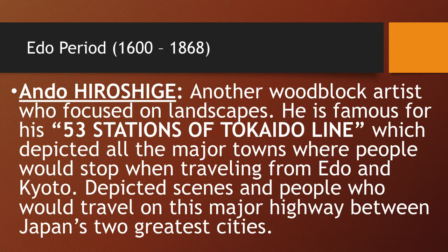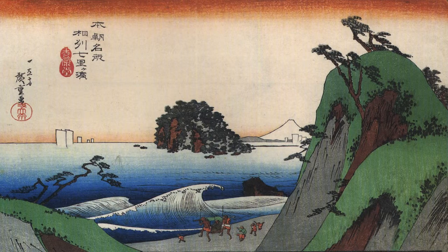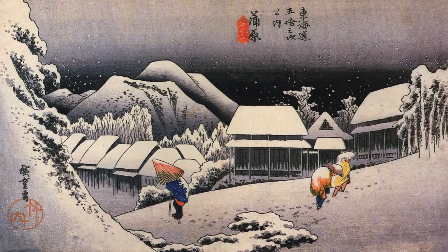Hiroshige's woodblock prints all focus on scenes from the Tokaido line. You had to stop for lodging or food at different cities on this road, and there were 53 stops or cities on this line between Kyoto and Edo. He would depict scenes from those stops on that highway between Japan's two greatest cities. These are examples of such stops — areas where travelers could rest or find shelter traveling between Edo and Kyoto. This is Hiroshige.